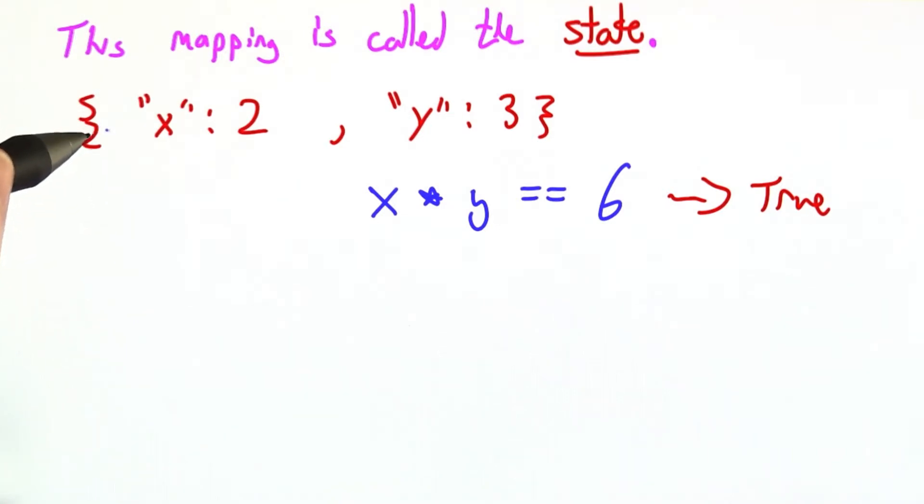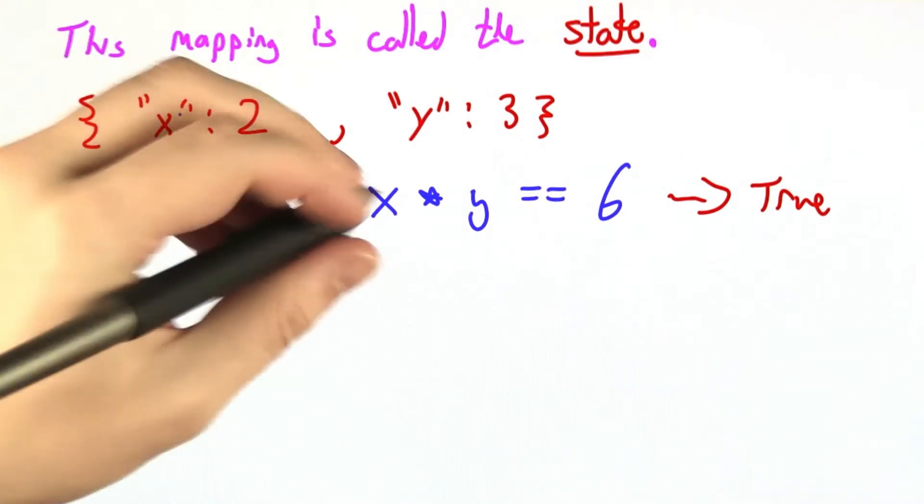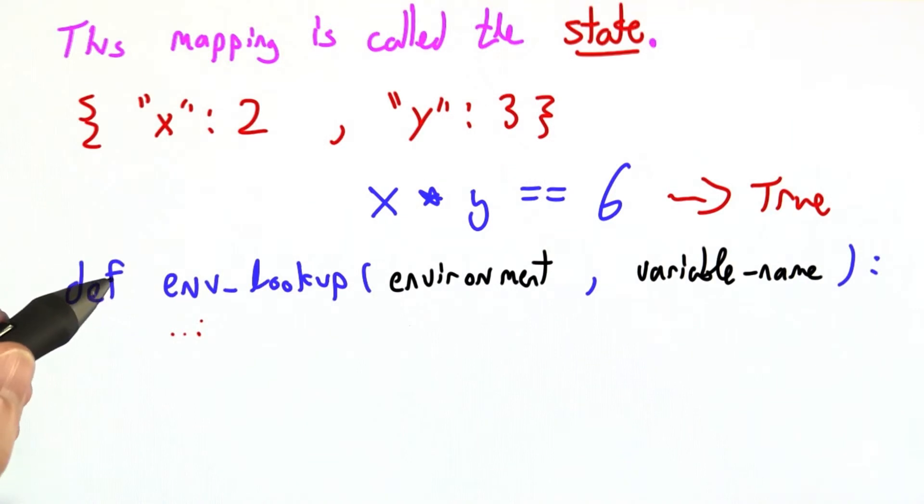Now later we may want our environment to be a little more complicated than just a single Python mapping. So we're going to introduce an abstract function to query it. So we'll just make a promise to ourselves. We're going to write a function called environment lookup,